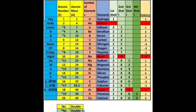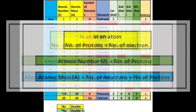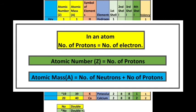Atomic number is represented by Z and atomic mass is represented by A. Atomic number is the number of protons present in an atom. Although in an atom the number of protons equals the number of electrons, we use protons in the definition because the number of electrons can increase or decrease, but since protons are present in the nucleus, their number remains constant.